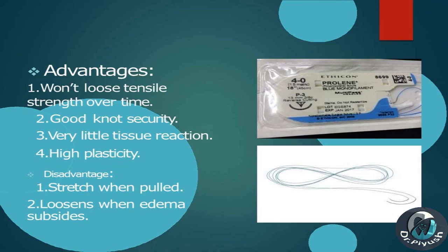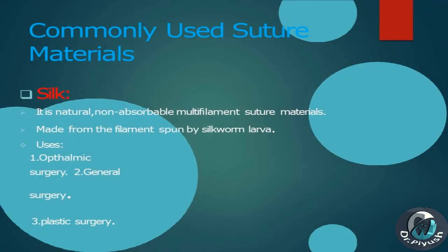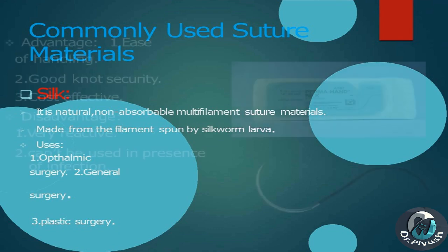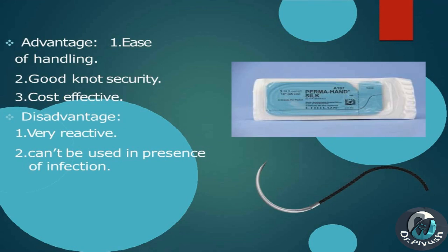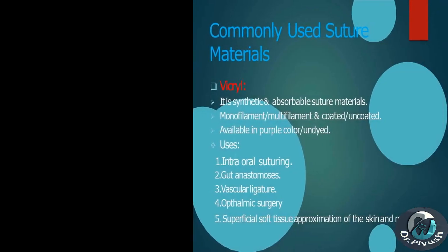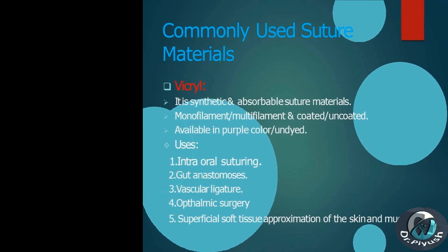Polypropylene disadvantages: stretches when pulled, loosens when edema subsides. Silk: natural, non-absorbable multifilament suture material made from the filament spun by silkworm larvae. Uses: ophthalmic surgery, general surgery, plastic surgery. Advantages: ease of handling, good knot security, cost effective. Disadvantages: very reactive, cannot be used in the presence of infection.